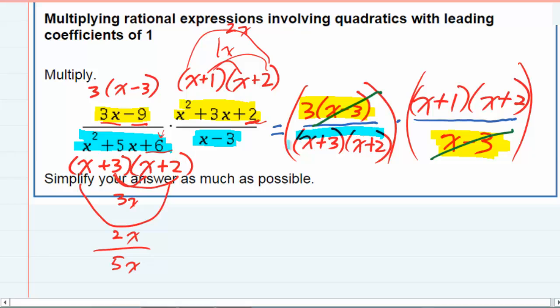Looking in the other direction, these two both have an (x plus 2). So I'm going to cancel this (x plus 2) with that (x plus 2).